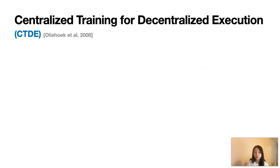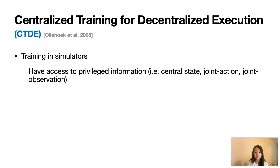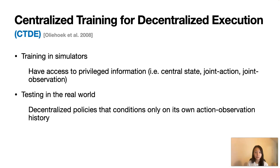Most methods for learning in DECPOMDPs use the decentralized training for decentralized execution framework, also known as CTDE. CTDE assumes training is done in simulators, where we have access to privileged information such as the central state and joint action. Testing is done in the real world, so agents only have access to their own action observation history at test time.